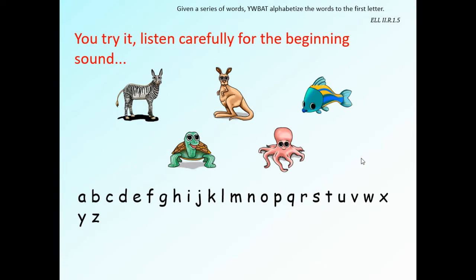Now you try — listen carefully for the beginning sounds. We have a zebra, a kangaroo, a fish, an octopus, and a snake. What do you think goes first? Is it a zebra? No — that letter is at the end of the alphabet. What about fish? Yes, because F is near the beginning. Then kangaroo, then octopus, then a turtle, and then we know zebra goes last.